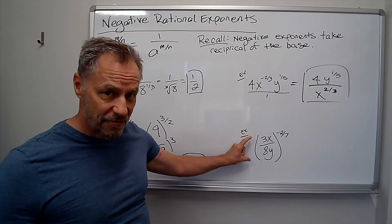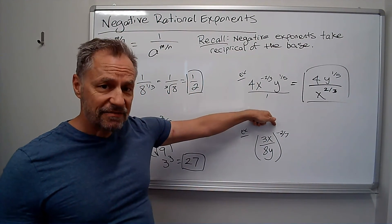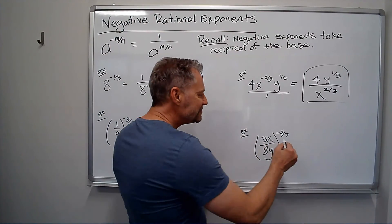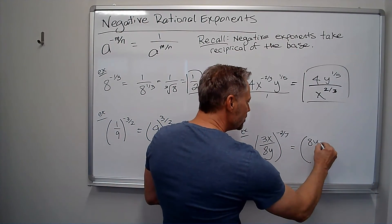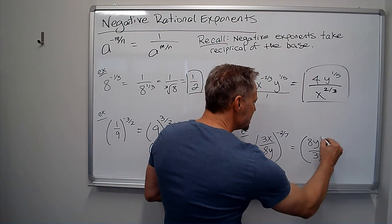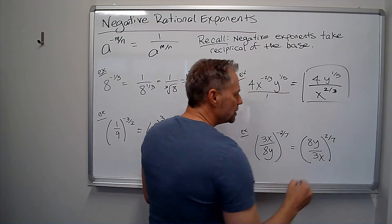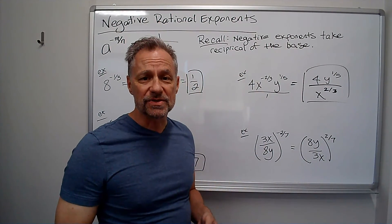Okay, again, I've got a fraction to a negative exponent. The negative disappears on the exponent by just flipping over the denominator, taking its reciprocal. And then I've got that to the 2/7.